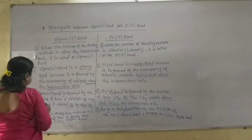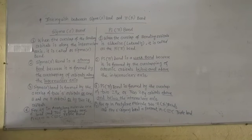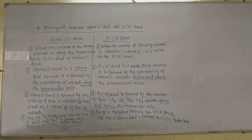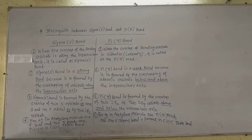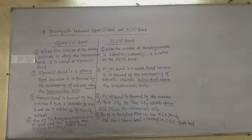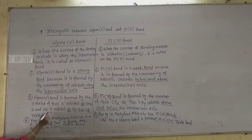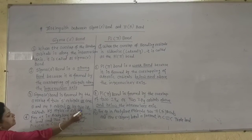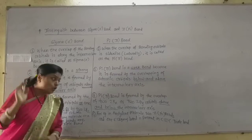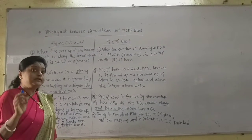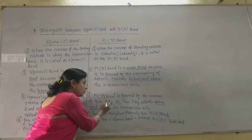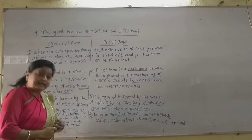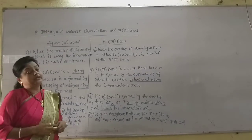Now, which orbitals form the sigma bond? Sigma bonds are formed by the overlapping of two s orbitals, or one s and one p orbital, or by two pz orbitals — because they lie on the inter-nuclear axis — or by hybrid orbitals. But the pi bond is formed only by the overlap of two 2px orbitals or two 2py orbitals, as they overlap above and below the inter-nuclear axis.